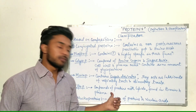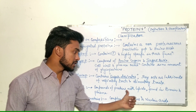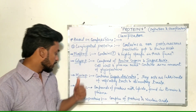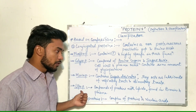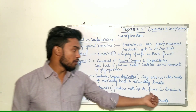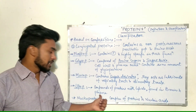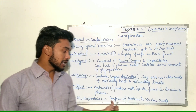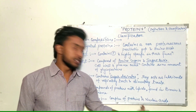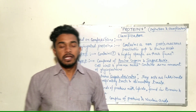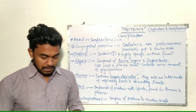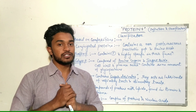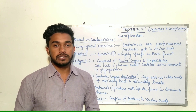Lipoproteins are compounds of proteins with lipids, and they are found in the brain and plasma. Nucleoproteins are complexes of proteins and nucleic acids. Later we will discuss the structure of proteins in another topic.